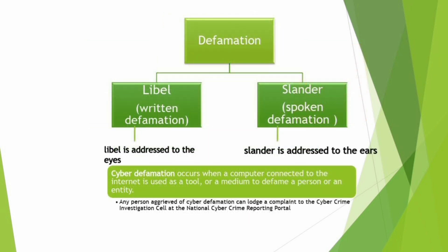Defamation falls into two categories. If the false statements are written and published, then it is libel. If the defamatory statement is spoken, then it is slander. When libel is addressed to the eyes, slander is addressed to the ears. Any such act occurring on cyberspace leads to cyber defamation or online defamation. Cyber defamation occurs when a computer connected to the internet is used as a tool or a medium to defame a person or an entity.